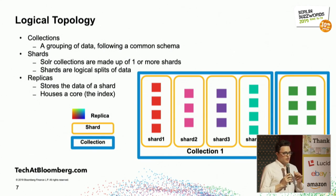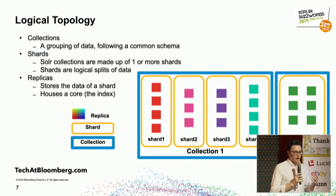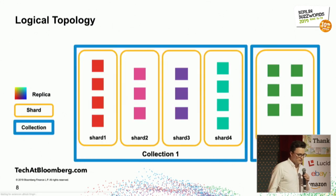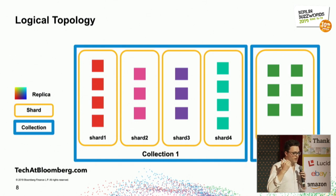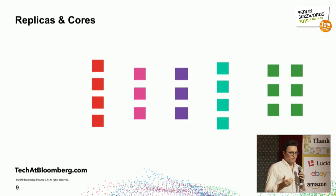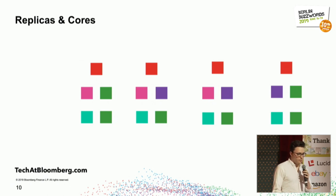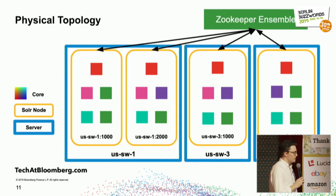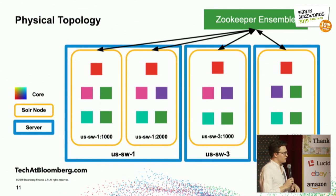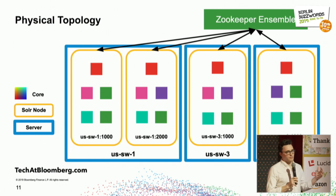This is basically how our logical and physical topologies meet. They house Solr cores, which are just a copy of the index. If we take away the clouds and the collections and shards, we're left with just replicas. We can shuffle these replicas around however we want. Once we bring up the physical topology layer, you can see that the server and Solr nodes view is just a reimagining of the same data seen in a different way.